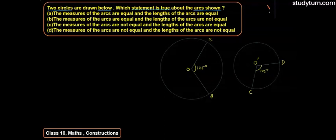In this question, 2 circles are made — in the first circle one arc is drawn, arc AB, and in the second circle arc is CD. The first circle's center is O and the second circle's center is O'. The two arcs are made at a central angle at the center of each circle.